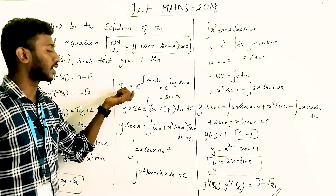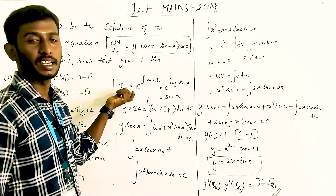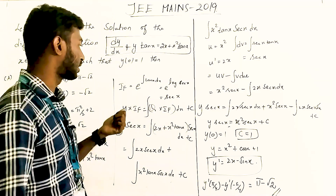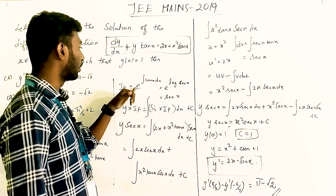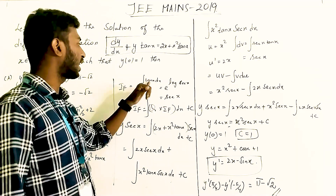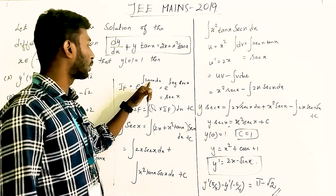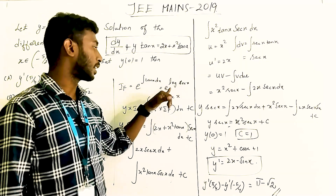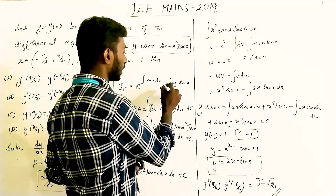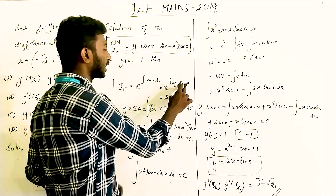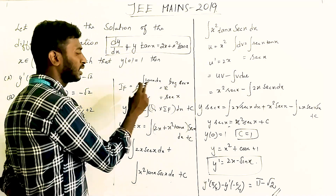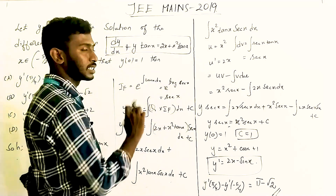First, the integrating factor is given by the formula e^(∫p dx). So e^(∫tan x dx). Integrating tan x gives log|sec x|, so the integrating factor IF = e^(log sec x) = sec x.